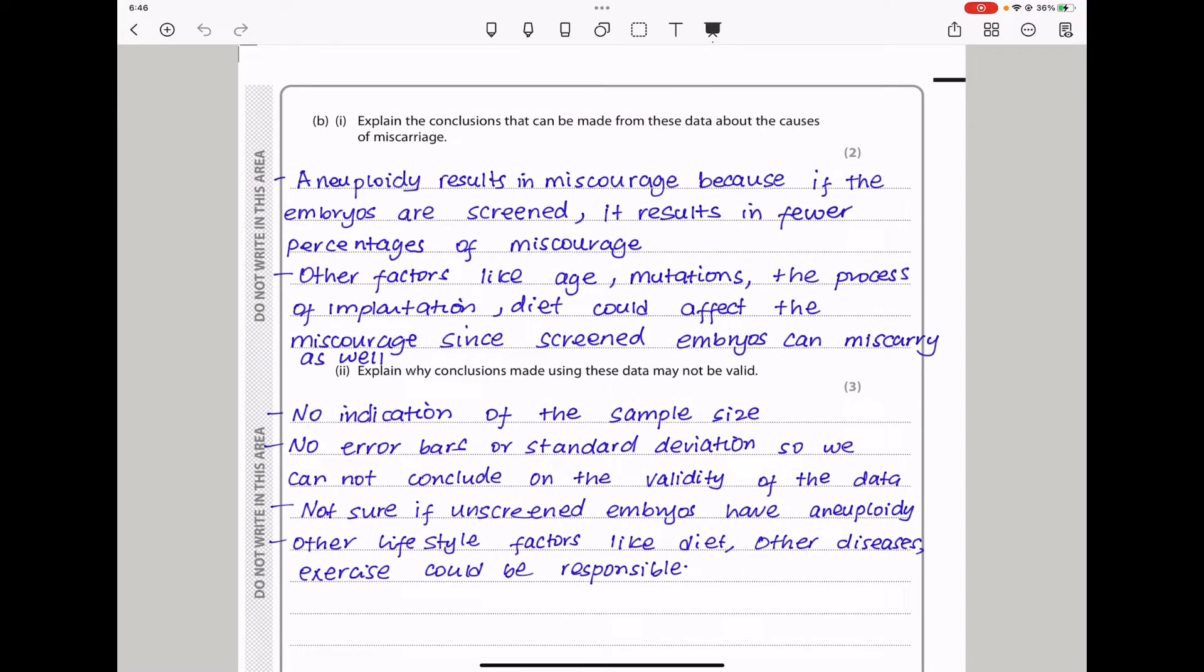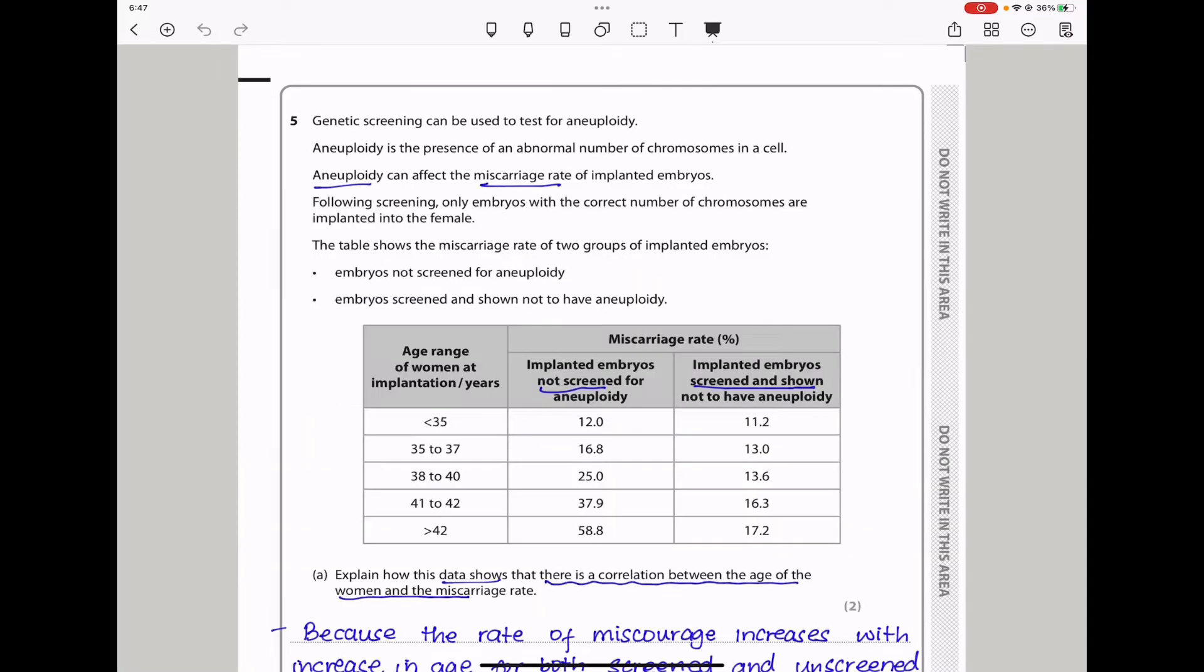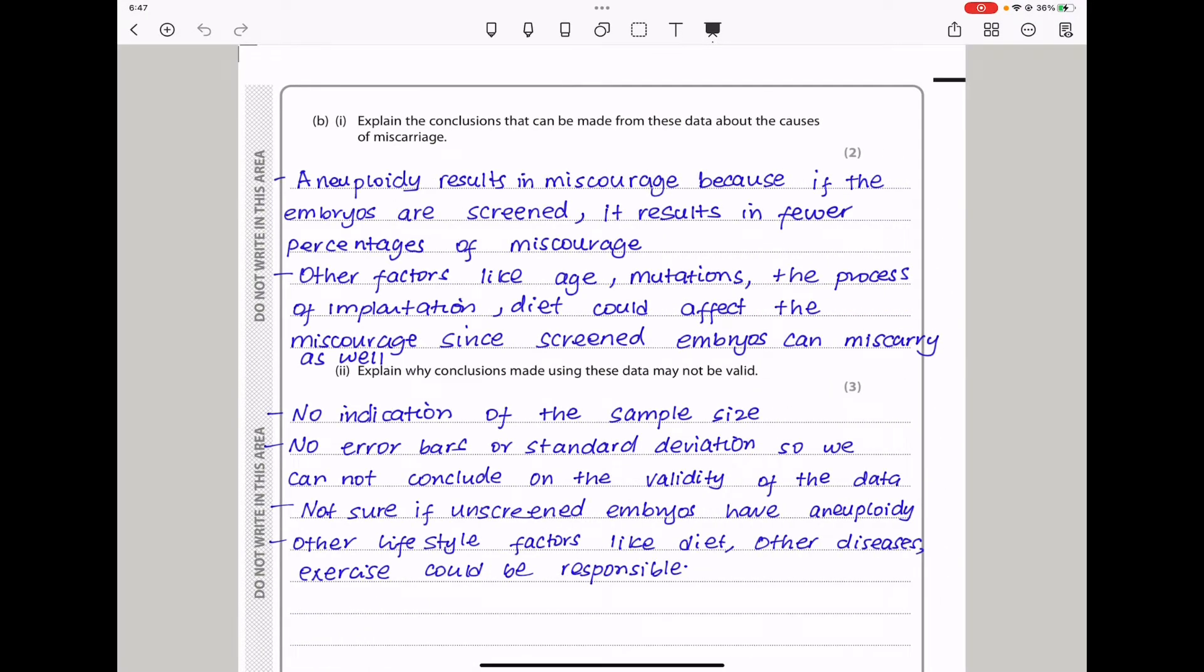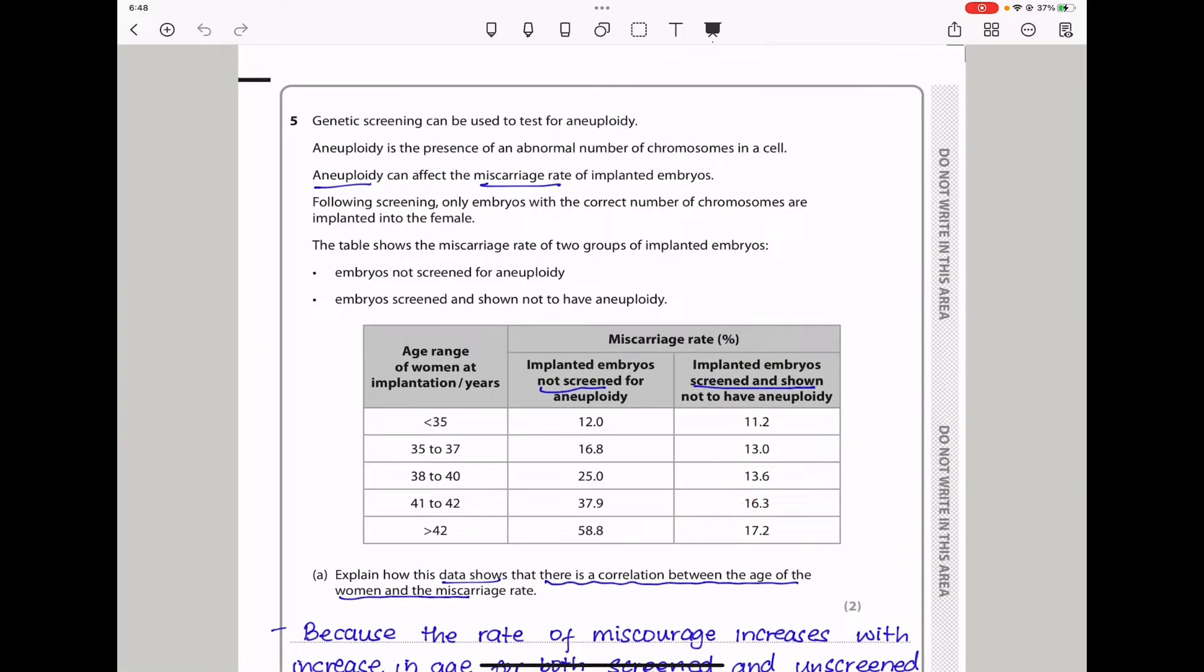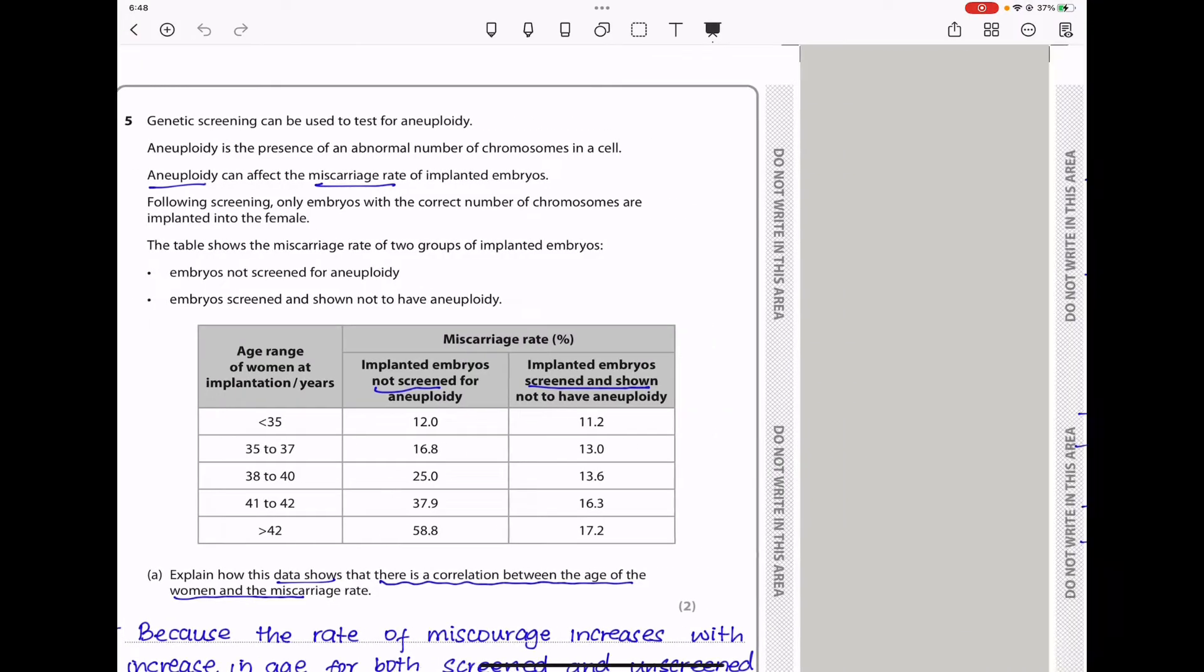Here they say, explain the conclusions that can be drawn from this data about causes of a miscarriage. As age increases, the percentage of miscarriages increases more among the embryos that were not screened for aneuploidy in comparison to those that were screened. However, there are other factors that were not considered by this data that could also lead to a miscarriage. So I said, aneuploidy results in miscarriage because if the embryos are screened, it results in fewer percentages of miscarriages. Other factors like age, mutations, the process of implantation, diet could affect the miscarriage since screened embryos can miscarry as well. This shows us that aneuploidy is not the sole cause of miscarriages.